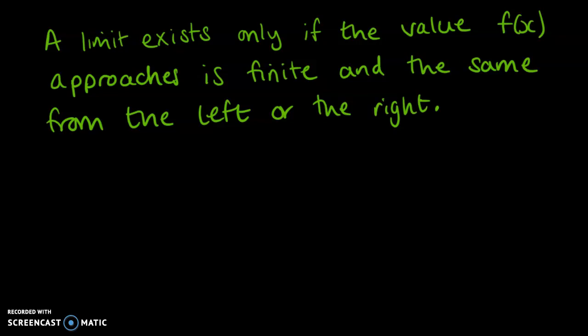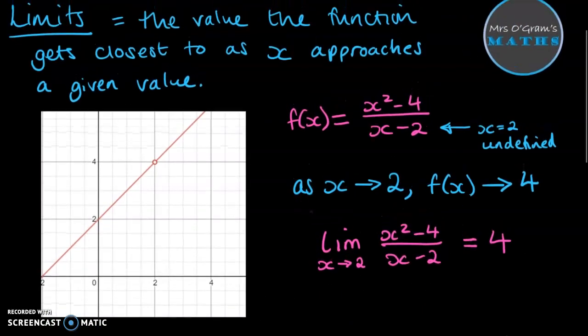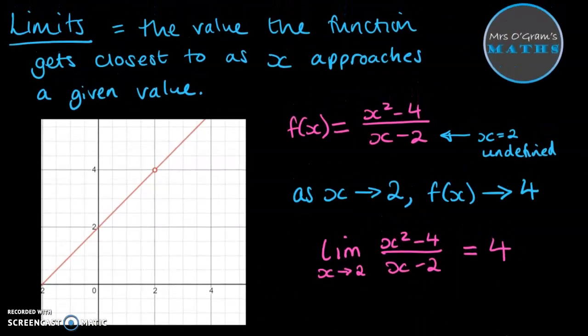OK, so if we take a look at that graph that we had before, back up here, we can see that if we approach this from the right, we would head towards 4. If we approach it from the left, we head towards 4. Therefore, our limit does exist right here. When we're approaching x equals 2, from either the left or the right, we will get that value of 4. I'll show you some examples that are different now.